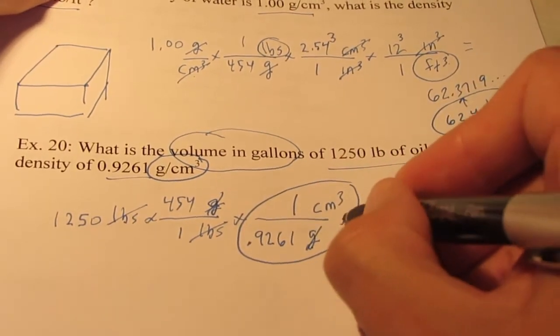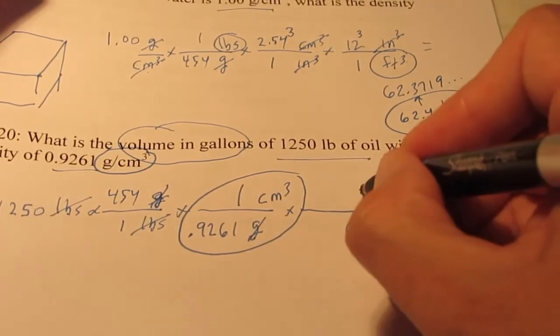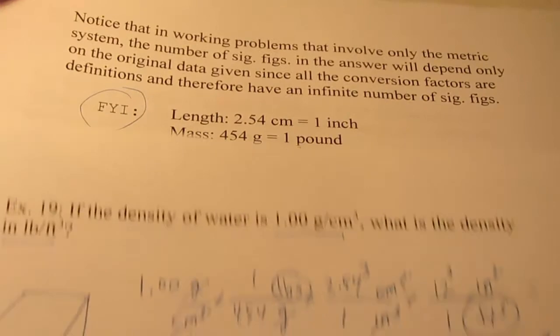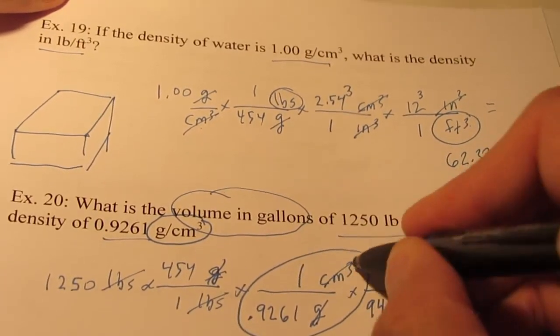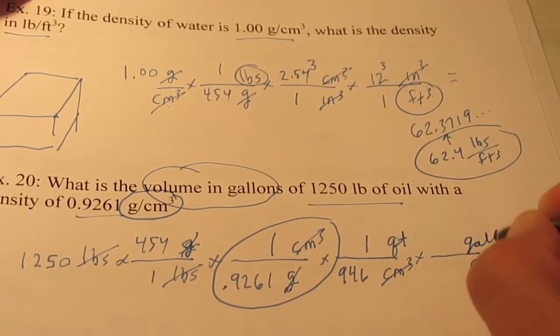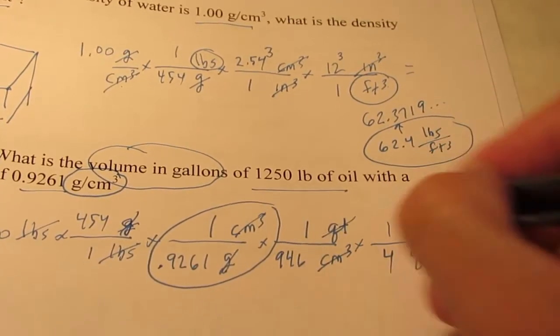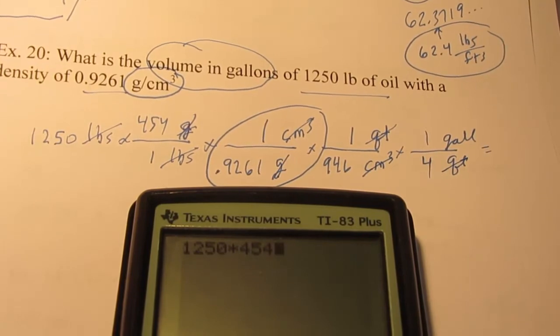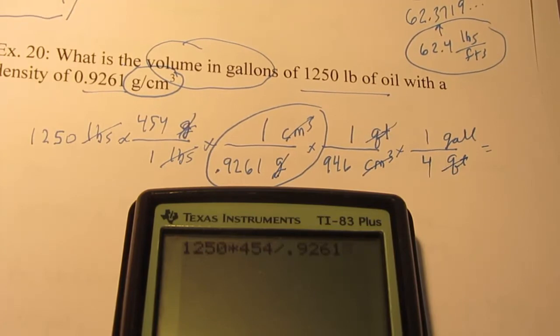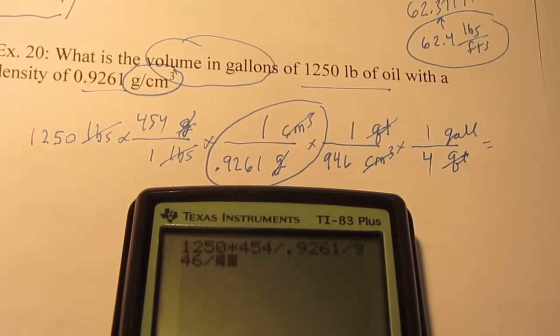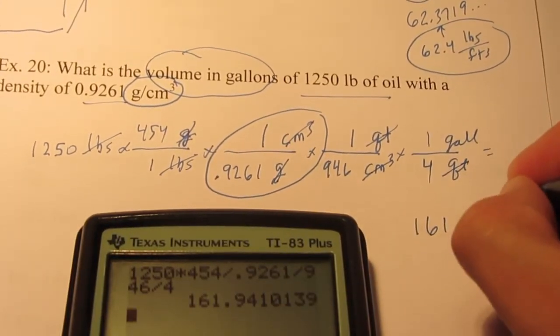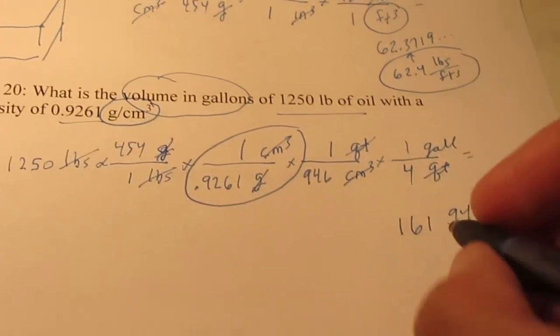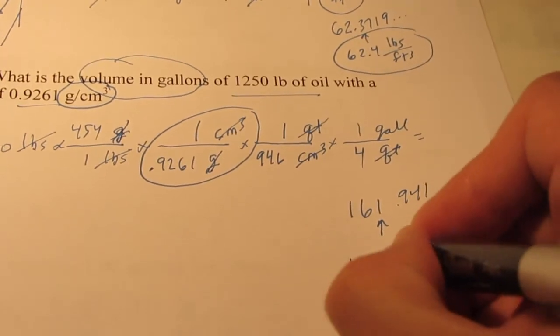Now we simply need to get into gallons. We're going to go cubic centimeters to quarts, because I don't know how many cubic centimeters are in a gallon. One quart is 946 cubic centimeters. And then finally, we can go quarts to gallons. One gallon has four quarts in it. Let's see: 1250 times 454 divided by 0.9261 divided by 946 divided by 4. My calculator says 161.941. I'm allowed three sig figs, so let's call this 162 gallons.